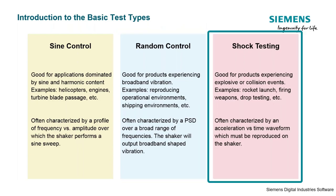The last test type we'll discuss is shock testing. This is good for products experiencing explosive or collision events — think handling, transportation, or surface environments. In this case we don't characterize it with a frequency spectrum; instead we characterize it with an acceleration-versus-time waveform, which will be reproduced on the shaker.